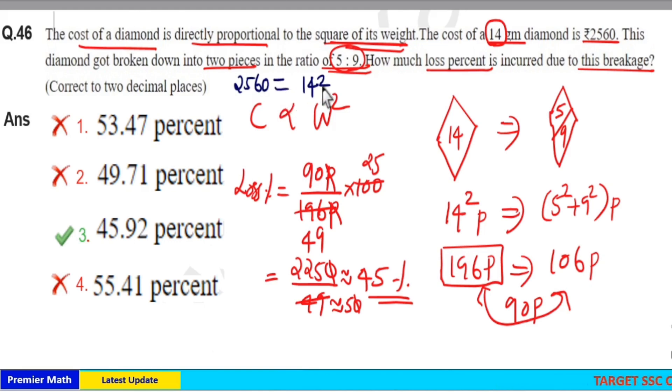Now if I remove this proportional sign, I can write it as 14 square part. Now 196 part is equal to ₹2560. You don't need to get one part because you need just the loss, that is 90 part. So this 90 part loss is out of this initial 196 part. Then if you convert into percentage, you will get loss percentage.